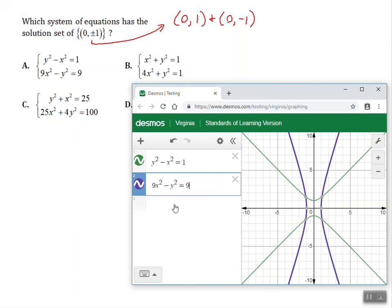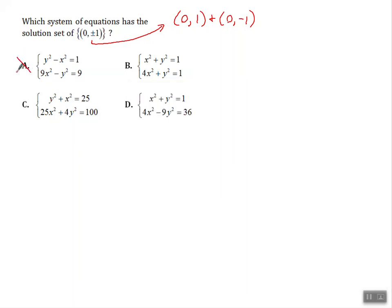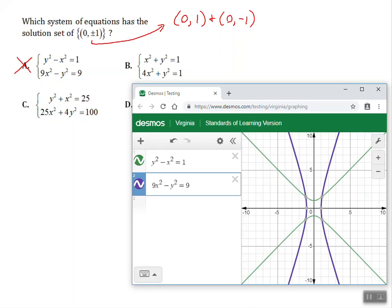And I'm looking for the solution set. Oh, and it looks like this system, they cross four different times. But none of them are crossing at 0, 1 and 0, negative 1. So this is not going to be our answer choice. So I know it's not answer choice A. And when I know it's not an answer, I put a red X right through that answer choice.